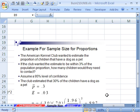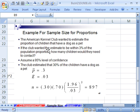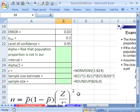Here's our example. The kennel club wanted to estimate the proportion of children that have a dog as a pet. If the club wanted the estimate to be within 3%, that's our error, of the population proportion, how many children would they need to contact? Assuming 95% confidence interval, and the club estimated that P bar would be 30%, children that have a dog as a pet. Let's go ahead and calculate this. We've entered our data into the sheet.